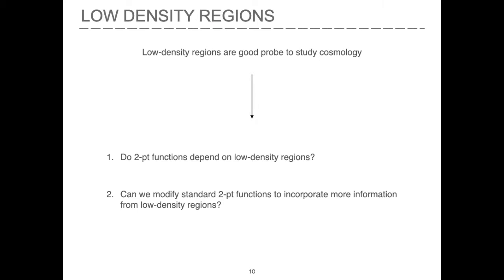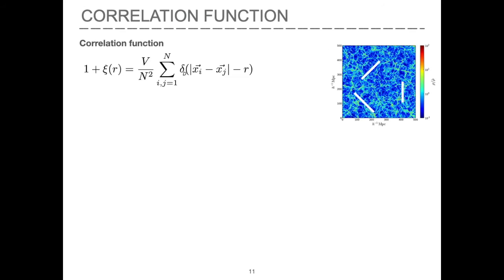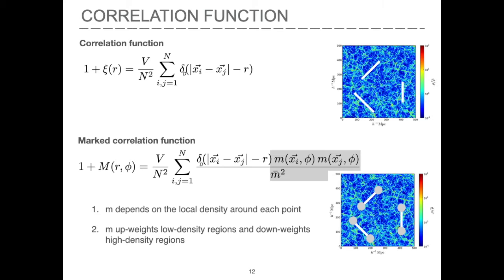Two questions arise naturally. Do standard two-point statistics depend on low-density regions? And how can we modify them to encompass more information from these regions? Two-point correlation functions count the excess of pairs at a given distance. Since most galaxies are in high-density regions, the low-density ones contribute little to this statistic. A possible way to make the two-point function depend more on low-density regions is to multiply each point by a mark M that depends on the local density around that point, such that it upweights points in low-density regions compared to those in high-density regions.